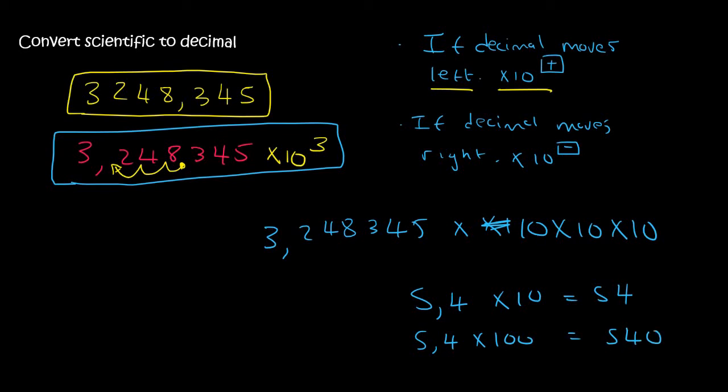So as we times by 10, the decimal has to move one place to the right. And if we times by 100, then it would have to move two places. So if we're timesing by 10 three times, then your decimal needs to move three times. And so you end up with a number of 3,248,345, which is what we started out with at the beginning.